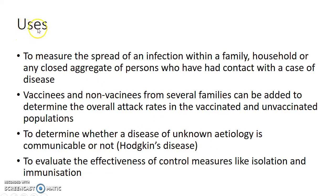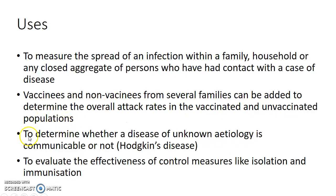Now, what are the uses of secondary attack rate? Secondary attack rate can be used to measure the spread of an infection within a family, household, or any closed aggregate of persons who have had contact with a case of disease. Vaccinees and non-vaccinees from several families can be added to determine the overall attack rates in the vaccinated and unvaccinated populations.